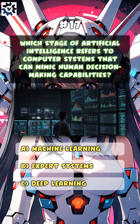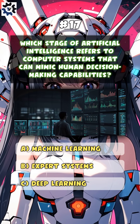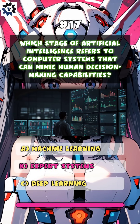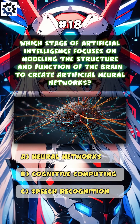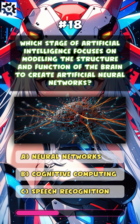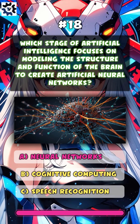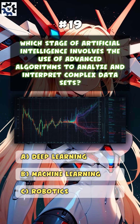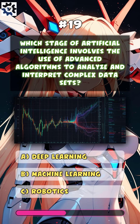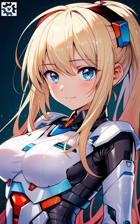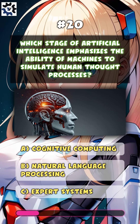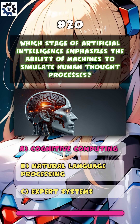Which stage of artificial intelligence refers to computer systems that can mimic human decision-making capabilities? A, neural networks. Which stage of artificial intelligence involves the use of advanced algorithms to analyze and interpret complex data sets? A, deep learning. Which stage of artificial intelligence emphasizes the ability of machines to simulate human thought processes? A, cognitive computing.